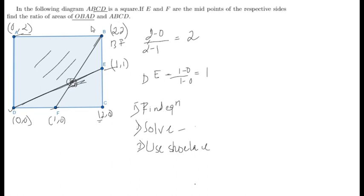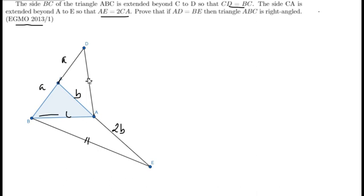Let's move on to the last problem of the day. This is from EDO 2013, Problem 1. We are given that ABC is a triangle, CD equals BC, and the segment is extended beyond A so that AE equals 2CA. We are told to prove that if AD equals AB, then angle ABC is a right angle.